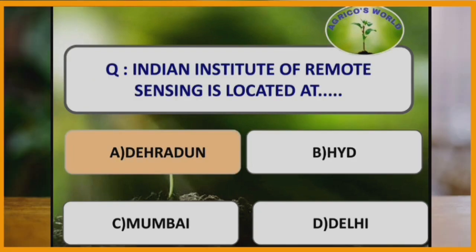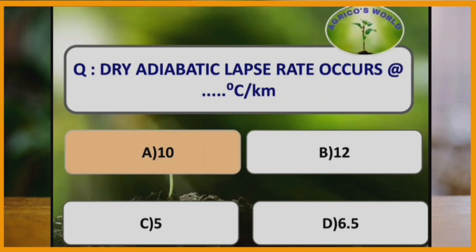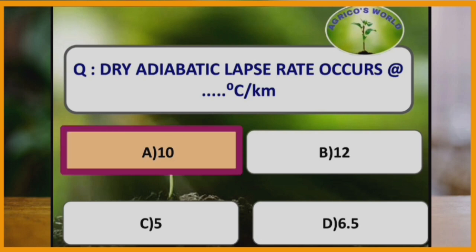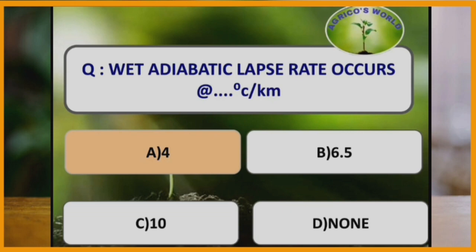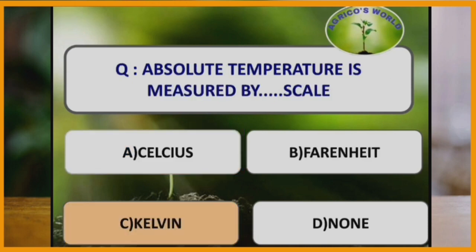Albedo of soil is around 30 percent. Indian Institute of Remote Sensing is located at Dehradun. Dry adiabatic lapse rate occurs at 10 degrees Celsius. Wet adiabatic lapse rate occurs at 4 degrees Celsius. Absolute temperature is measured by the Kelvin scale. Absolute zero is at minus 273 degrees Celsius or 0 Kelvin.